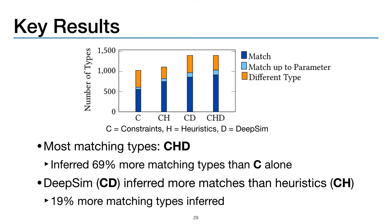Here are our key high-level results. We ran SimTyper under four configurations shown on the x-axis: c means we used constraints, h means we used heuristics, and d means we used the DeepSim network. Notably, we found we could infer the most matching type annotations under the chd configuration, which combines all three approaches. Under this configuration, we inferred 69% more matching type annotations than the constraint configuration alone. Under the cd configuration — constraints plus DeepSim — we inferred 19% more matching type annotations than the ch configuration, suggesting that the DeepSim network is an effective approach to inferring usable type annotations.